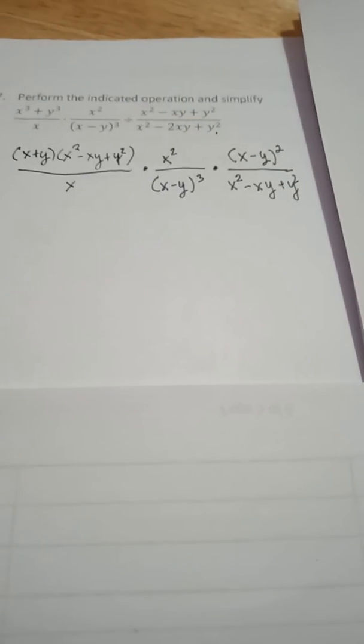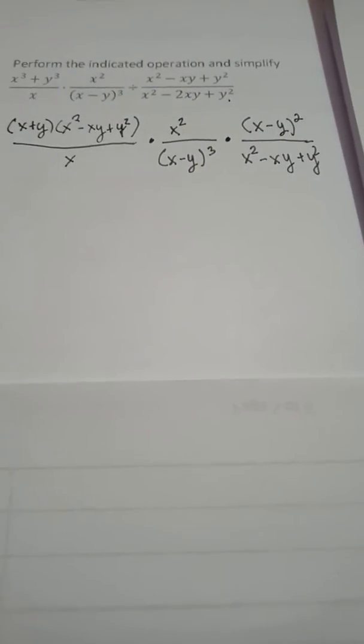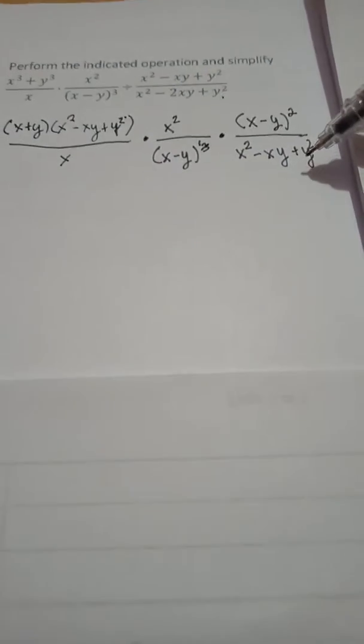Then, as you can see, the factors that can be cancelled out, since if you divide the numerator and denominator, that would be equal to 1. For example, x minus y squared can be cancelled out. And then, x squared minus xy plus y squared can be cancelled out. This is equal to 1.